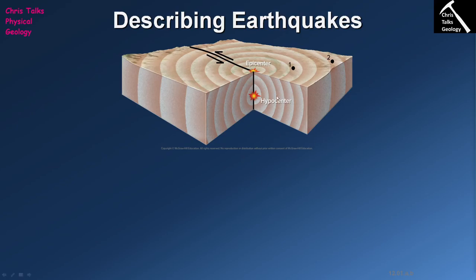In terms of the location where the earthquake itself actually occurs, that's going to happen at a location called the hypocenter. Directly above the hypocenter on the surface of the Earth is a term you're probably familiar with — the epicenter. So the epicenter isn't where the earthquake occurs; it's the point on the Earth's surface directly above the hypocenter, which is the actual location where the earthquake occurs.